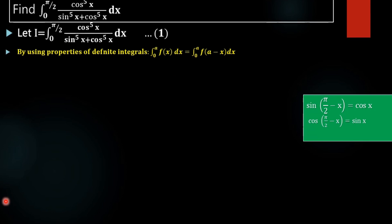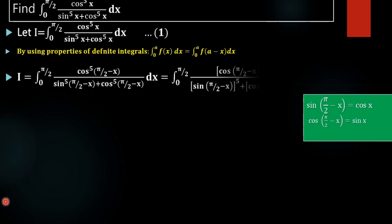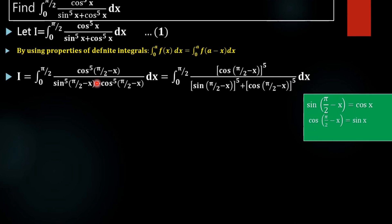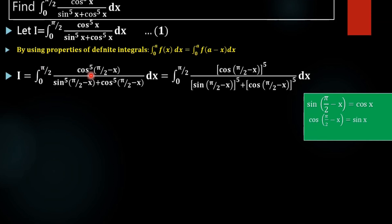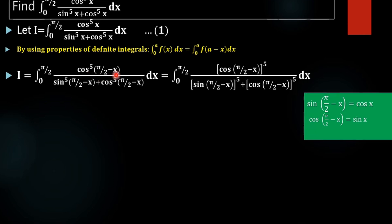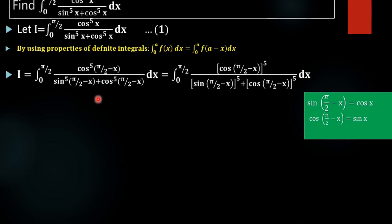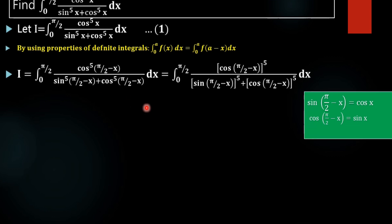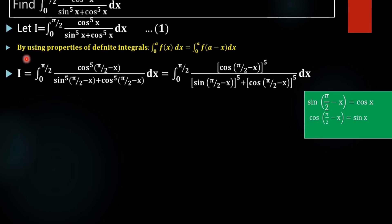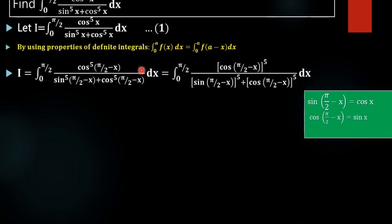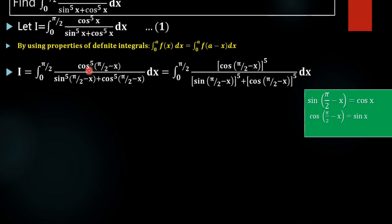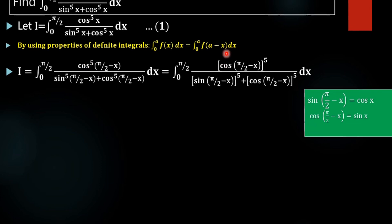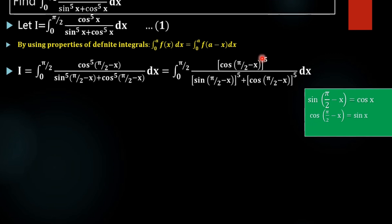On applying this property, we get i equal to — instead of x we are taking a minus x, and here a is π/2. That gives cos⁵(π/2 minus x) divided by sin⁵(π/2 minus x) plus cos⁵(π/2 minus x). We can rewrite cos⁵ as cos(π/2 minus x) whole raised to 5.